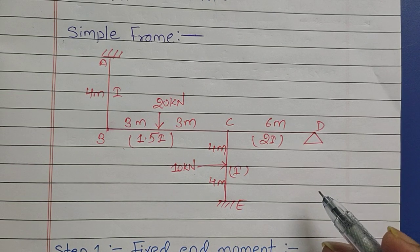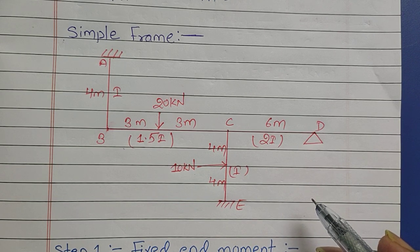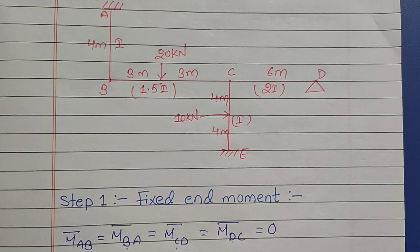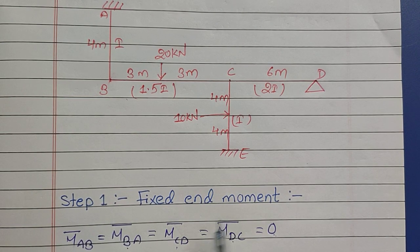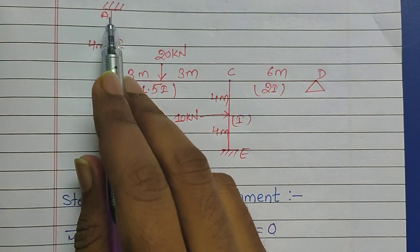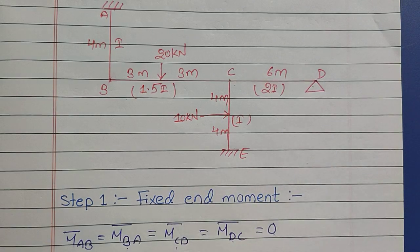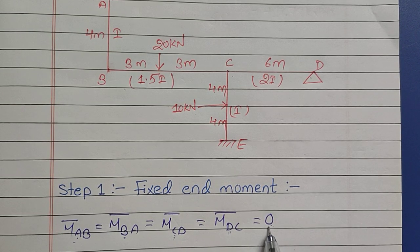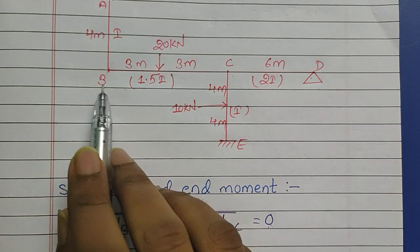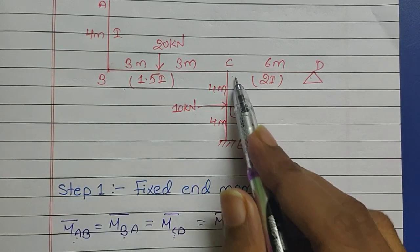Without wasting time, let's begin the video. We come to step one, which is going to be the fixed end moment. In this step we will be finding the fixed end moment at different points. The fixed end moment is mainly due to loading. As you can see, the loads on spans AB and CD are missing, so the fixed end moment at ends A, B, C, and D is going to be zero. For spans BC and CE we need to calculate.